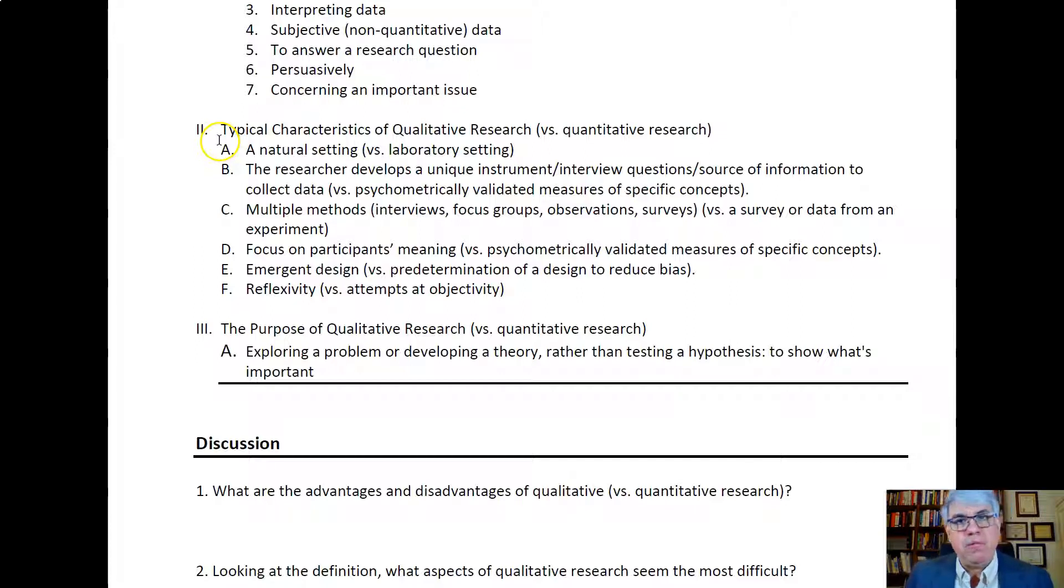Another characteristic of qualitative research is that it uses a lot of different methods. Typically, interviews, one-on-one interviews are the most common, but there's also focus groups, which are kind of like group interviews. You can go around observing people, or you can even use surveys like we do in quantitative research, if people are willing to write about their experience.